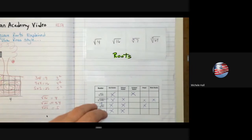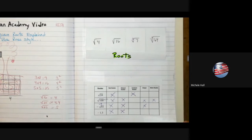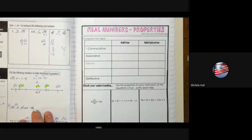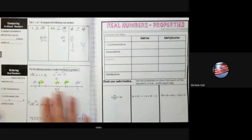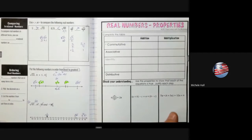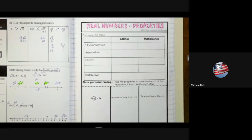The categories include whole numbers, irrational numbers, rational numbers, and real numbers. We compared them on number lines and with the inequality signs, and now we are working on real number properties.